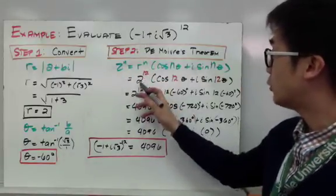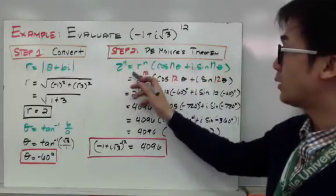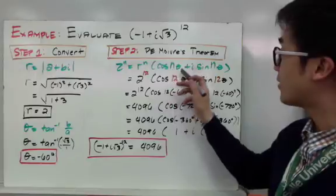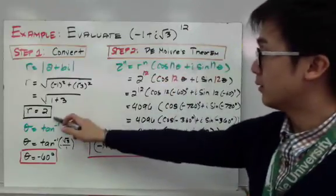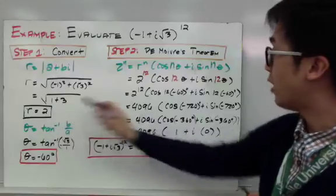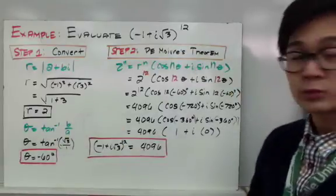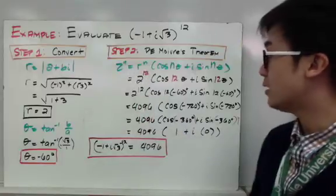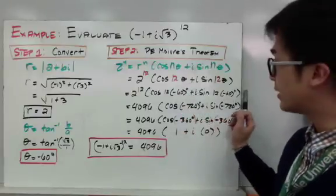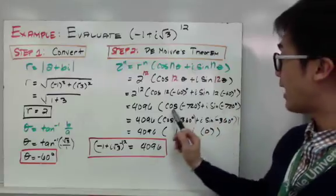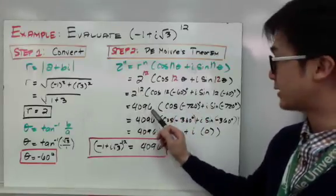We now have 2 times cosine theta plus i sine theta. Using De Moivre's theorem for z to the n, we use r raised to the n times cosine of n theta plus i sine of n theta, where n is the given exponent, r is the modulus we just solved, and theta is negative 60 degrees. Substituting our values: 2 raised to the 12th, cosine of 12 times negative 60 degrees, plus i sine of 12 times negative 60 degrees. Simplifying gives cosine of negative 720 degrees, and 2 to the 12th equals 4096.